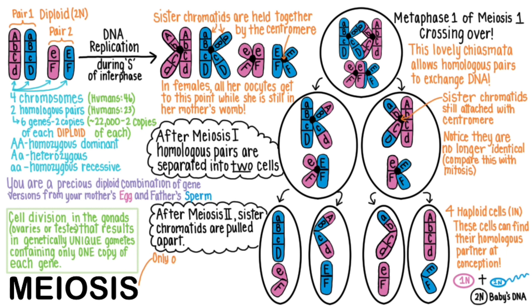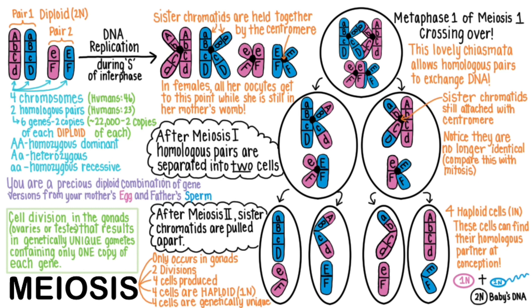In summary, meiosis only occurs in the gonads. It includes two divisions, not just one like mitosis. Four cells are produced, not two cells like mitosis, and these four cells are haploid — one N — not diploid cells like mitosis. And the four cells are genetically unique, compared with mitosis, which produces genetically identical daughter cells. You may find it useful to re-watch my video on mitosis so that you can feel confident of the key differences between mitosis and meiosis.